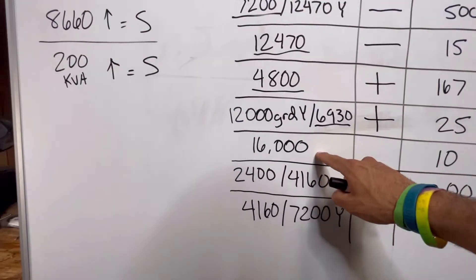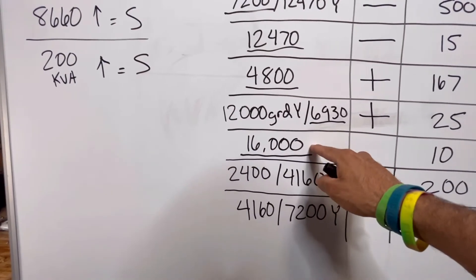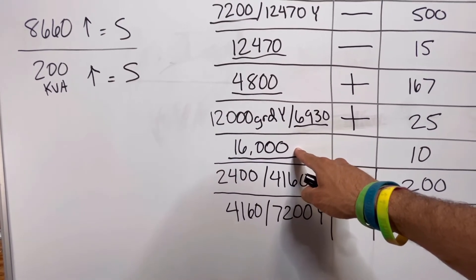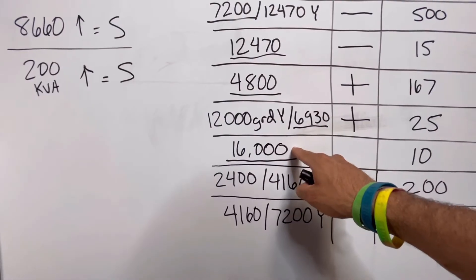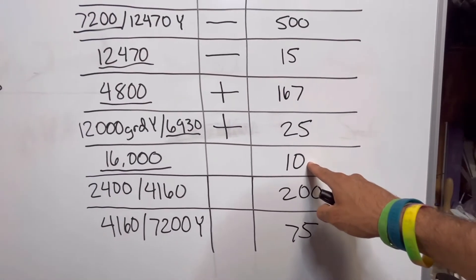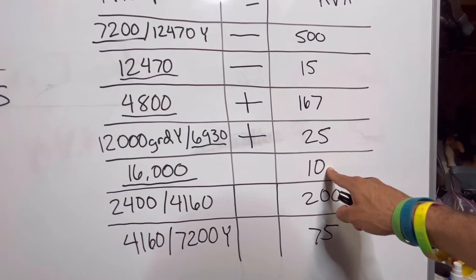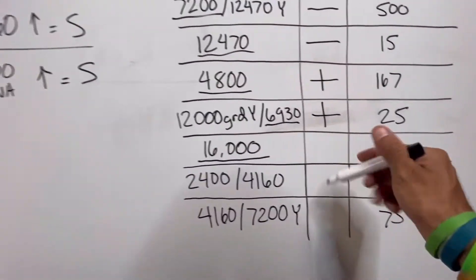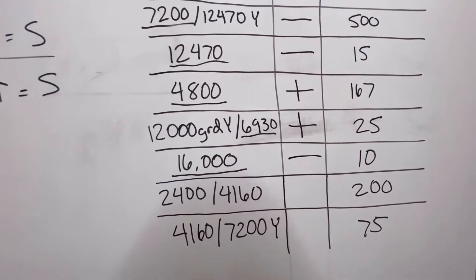Here, 16,000 volts — so I've already met one of my qualifications to be subtractive. I'm over 8660. It's only 10 KVA, so I'm under the 200 KVA requirement. But since I'm over on the voltage, automatically subtractive.